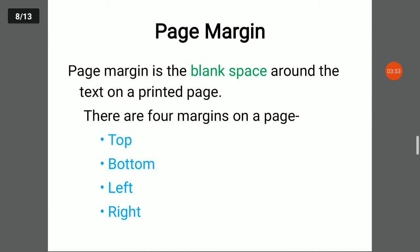Page margin. Page margin is the blank space around the text on a printed page. When you print a page on paper, you can see the surrounding white or blank space — that is called the margin. There are four types of margins on a page: top, bottom, left, and right.